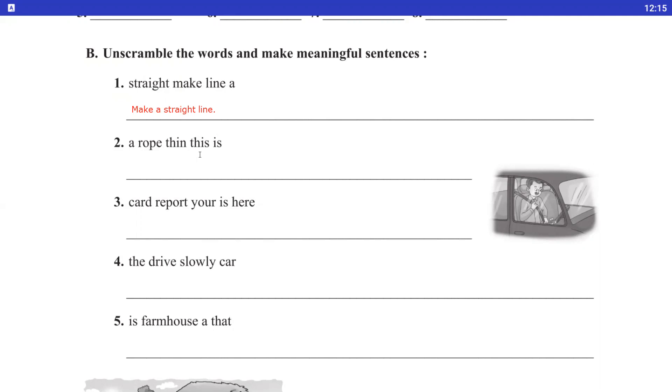A rope, thin, this is. You will start with this. T, H, I, S. This, in the capital T. This is a thin rope. Rope means rassi.